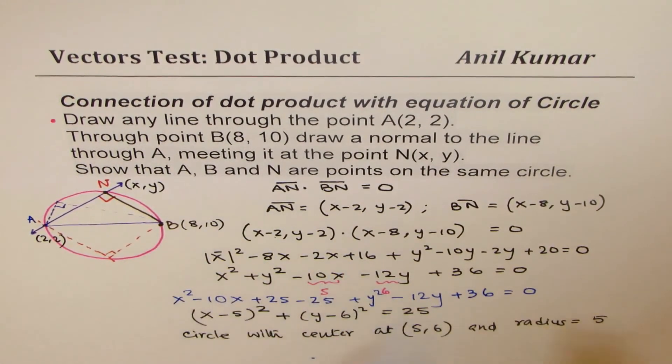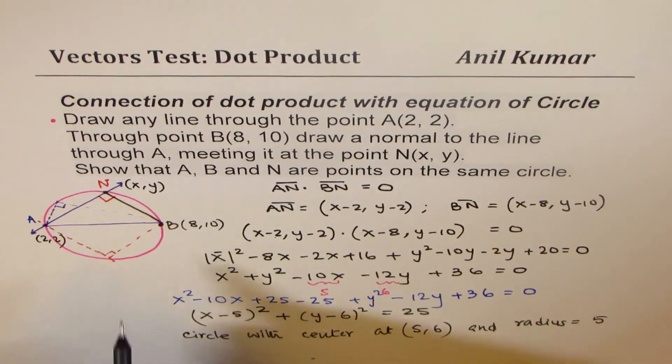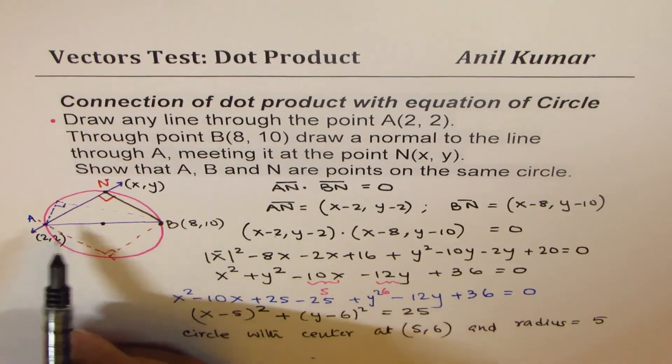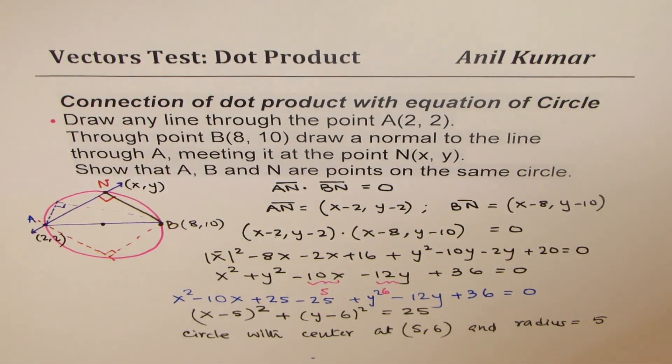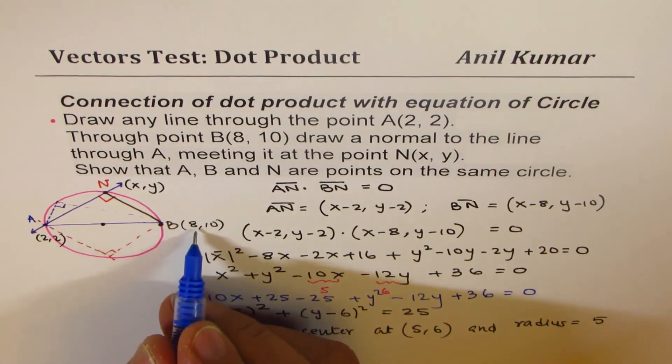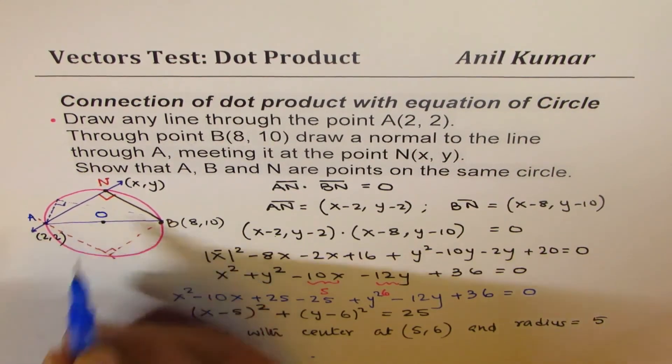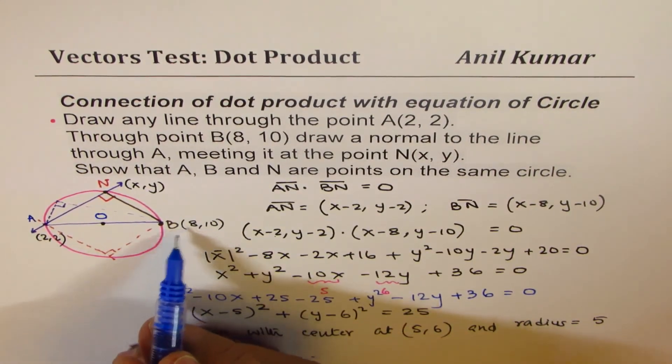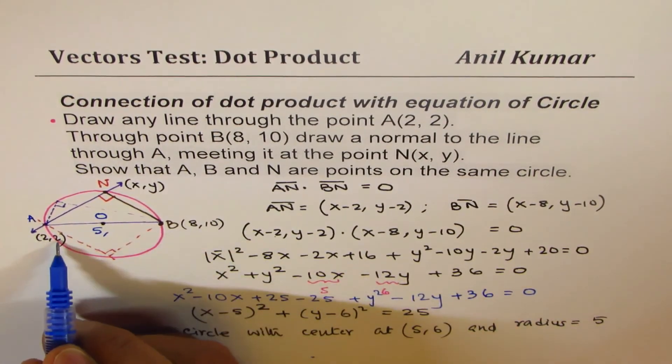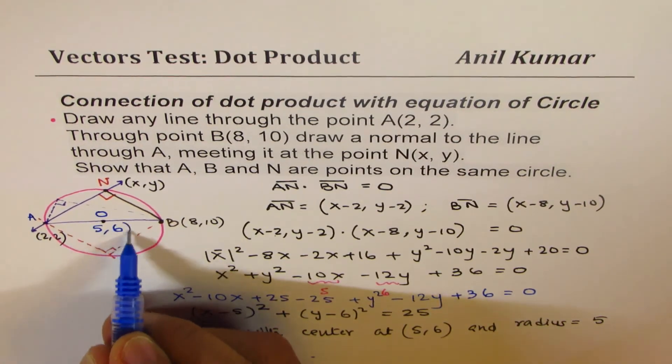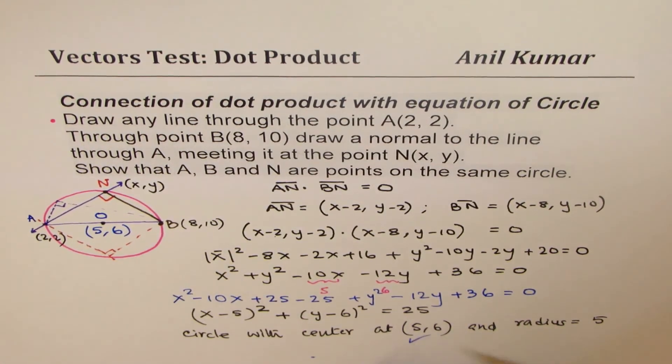So with the dot product, we actually get the equation of a circle. And with that, we have shown that A, B, and N are all on the circle with the center which is also the midpoint of these two. If I add 2 and 8, what do you get? 10. 10 divided by 2 is 5. 10 plus 2 is 12, divided by 2 is 6. So 5, 6, exactly what we are saying here.